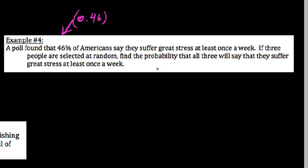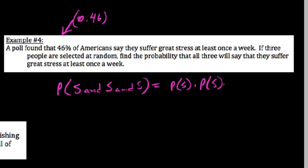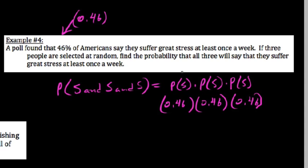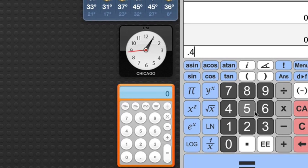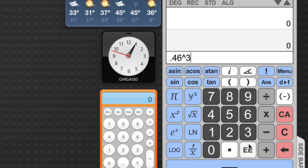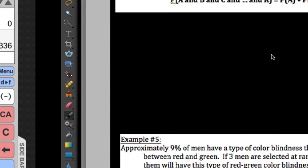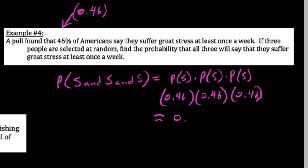What we're really looking for is the probability that all three will suffer great stress at least once a week. So we want stress and stress and stress. According to our rule, the first person we draw out that is stressed or not does not affect the mood of the second person. So these are independent events drawing of these people. We say probability of stress times probability of stress times probability of stress. In each one of these instances, we already know the probability of stress—it's 46% of the population. So just multiplying these out, 0.46 to the third power. Luckily we've got a calculator here. So about a 9.73% chance, 0.0973, which is about a 9.73% chance.